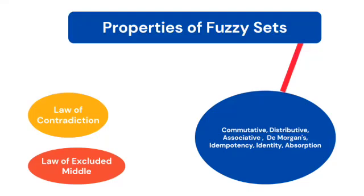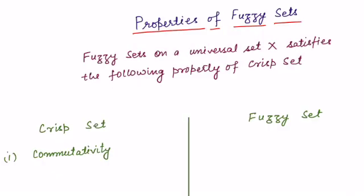Hi everyone. In this lecture we'll be studying a few properties of fuzzy sets. There are properties which fuzzy sets follow from crisp sets — that is, we can uplift these properties from crisp to fuzzy. These include commutativity, distributivity, associativity, De Morgan's law, and a few more. But there are properties like the law of contradiction and the law of excluded middle which we cannot uplift to fuzzy. We'll discuss these properties with the help of examples.